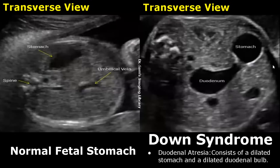Ultimately, Down syndrome is diagnosed with invasive tests such as chorionic villus sampling and amniocentesis in some cases. Thank you so much for watching — please subscribe and stay tuned for more imaging videos.